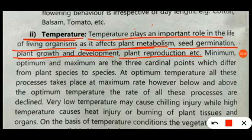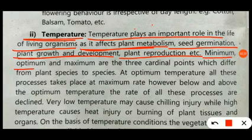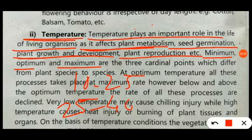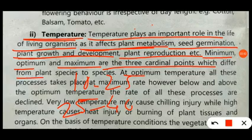Temperature plays an important role in the life of living organisms. There are three cardinal points: minimum, optimum, and maximum. Minimum means lower temperature, from 0 to 10°C. Optimum means between 10 to 25°C. Maximum means 25 to 40°C. These three cardinal points differ from place to place and between plant species.